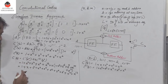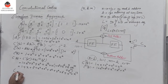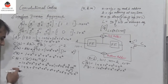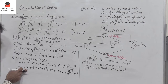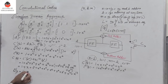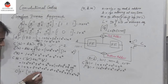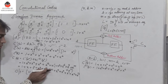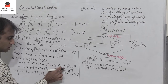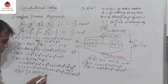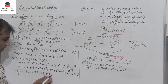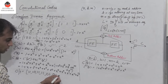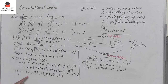Converting to bit sequences: the coefficient of x⁰ is 1, x¹ is 1, x² is 1, x³ is 0, x⁴ is 1, x⁵ is 1, x⁶ is 1, x⁷ is 1, x⁸ is 0, x⁹ is 1, x¹⁰ is 0, x¹¹ is 1, x¹² is 1, x¹³ is 1. So the final output is: 1 1 1 0 1 1 1 1 0 1 0 1 1 1. This matches the output obtained using the time domain approach for the same problem in the previous video lecture.